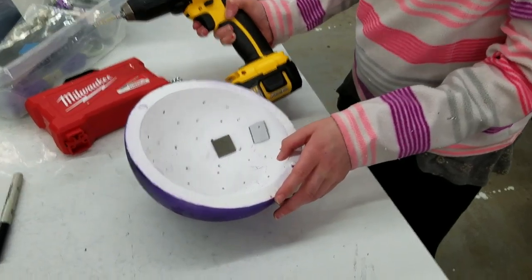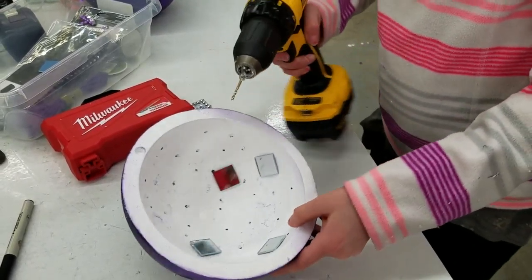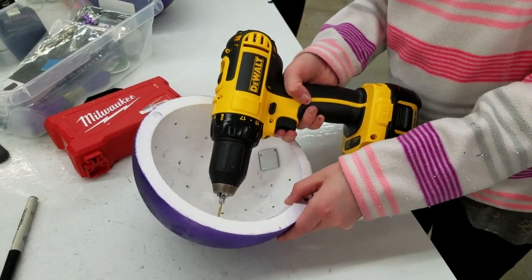So Ava, why is Maddie drilling holes in that styrofoam half wall? Because we can make holes right through. Oh, very quick.